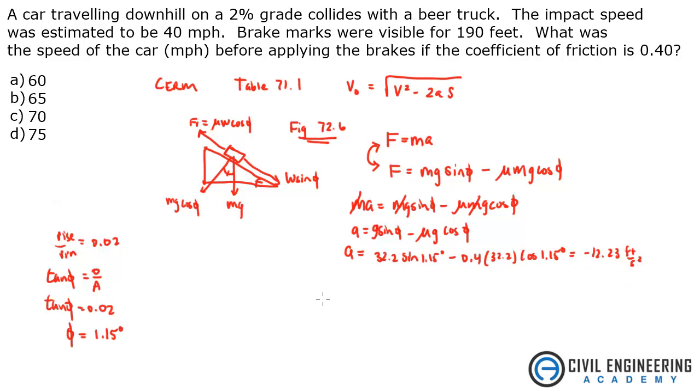It's negative because we are decelerating. So now that we have acceleration we can go back to our equation. V naught equals the square root. Now the final velocity was given as 40 miles per hour and we need to get everything in the same units. So 40 miles per hour times, there is a nice little table at the beginning of the CIRM that says you take miles per hour and you multiply it by 1.4667. That gives you feet per second. And that gives me 58.67 feet per second.